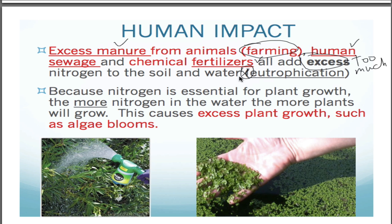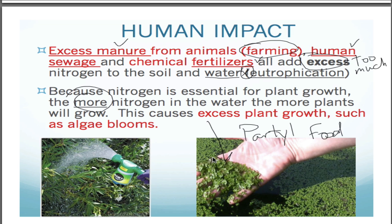Nitrogen is super important for plants to grow — we talked about that right at the beginning. Plants need nitrogen to create DNA, and so do we. So the more nitrogen that's in the water, the more plants there are going to be — it's party time for the plants because they have so much food. With all these fertilizers putting nitrogen into the water, they're going to grow like crazy. If you're driving by rivers and lakes right now, the lakes are green, they're gross, they smell bad — and that's from all these algae blooms, from all this excess plant growth.